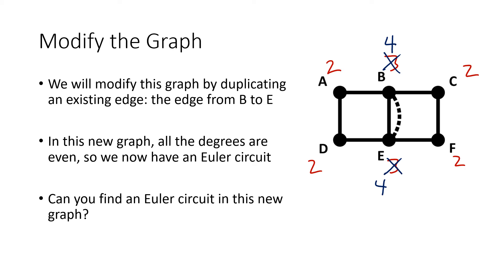And as we saw before, when there is an Euler circuit, it's usually pretty easy to find. So just as an example, let's start at A, and I'll go to B, and then I'll go over to C, I'll go down to F, go back over to E, I'll go up to B along that new edge, and then back down to E along the existing edge, over to D, and then up to A. And that's an Euler circuit for this new modified graph.